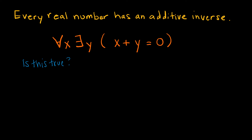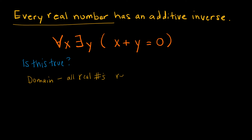We can see that we have a domain of all real numbers — every real number. In this domain, because it's all real numbers, in order to show that this is true, we would have to use reasoning and proof, because we can't go through an exhaustive list of all the real numbers since the real numbers are infinite. We will talk much more about reasoning and proof in the upcoming lessons.